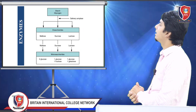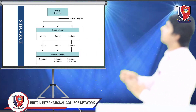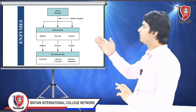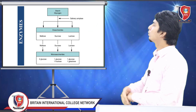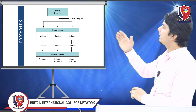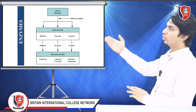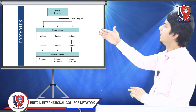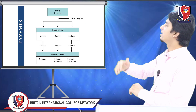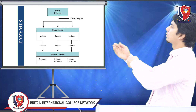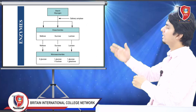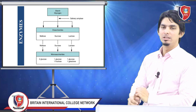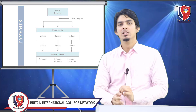This is a diagrammatic representation of carbohydrate digestive enzymes. Salivary amylase starts to break down starch. Disaccharides such as sucrose, maltose, and lactose are then acted upon by their respective enzymes, which convert them into their corresponding monomers. Students, you have to read and note these down.